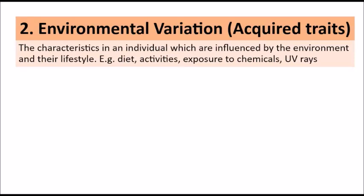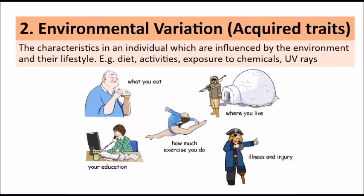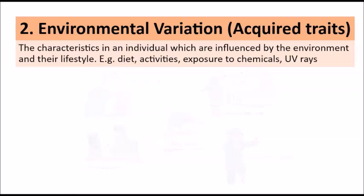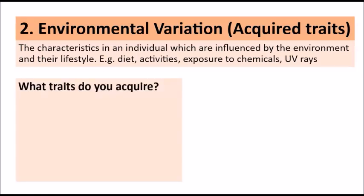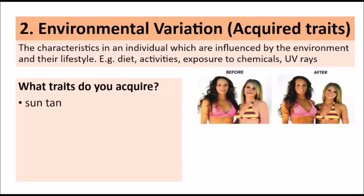Now let's look at environmental variation — these are more the acquired traits. They're often known as acquired traits because these characteristics are influenced by the environment and the lifestyle of the individual. This would include diet, the activities the individual partakes in, exposure to chemicals, UV rays — these are the types of factors that can influence an individual's traits or phenotypes. For instance, a suntan: going back to skin color, you may have inherited certain genes that determine your skin color, but if you go outside in the sun for a long time you can end up getting a darker skin color.